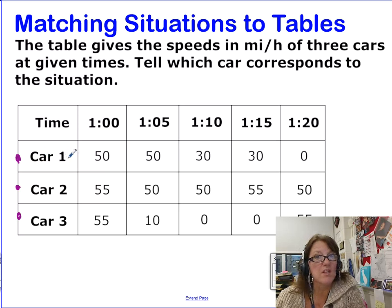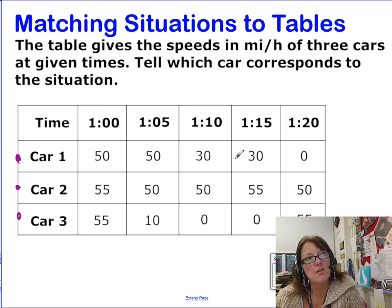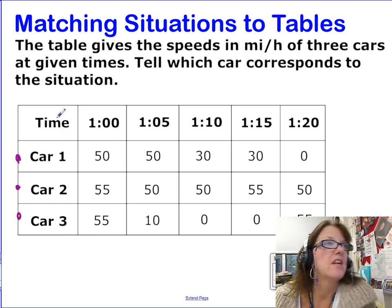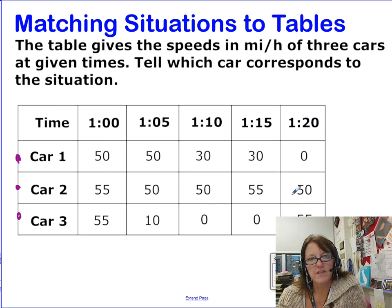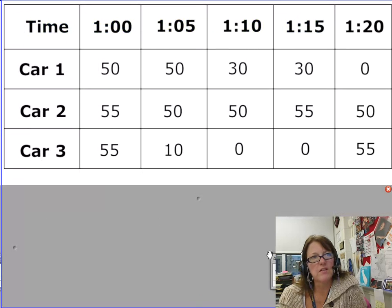Let's take a look. Car number one's story: as time progresses, it's traveling at 50 miles an hour, 50 miles an hour, then five minutes later it's 30 miles an hour, 30 miles an hour, and then zero means it stopped. Car number two is going 55 miles an hour, then 50, 50, 55, then 50. And finally, car number three, traveling 55 miles per hour, then only going 10 miles per hour, then stopped, stopped, not moving at all, and then all of a sudden back at 55 miles per hour.